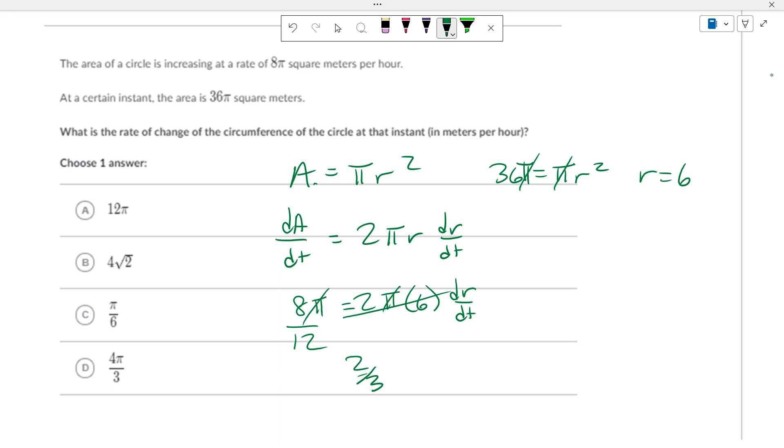Okay, and then, what's the change of circumference? Well, circumference equals 2 pi r. So, the dC/dt equals 2 pi dr/dt. And since this is 2 thirds times 2 pi, you get 4 thirds pi.